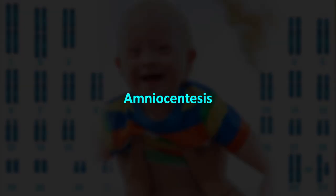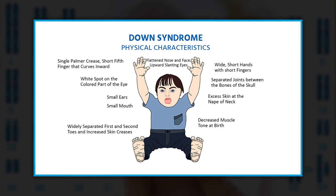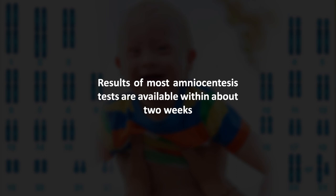With amniocentesis, the doctor inserts a thin needle through the pregnant woman's abdominal wall into the uterus. A small sample of amniotic fluid is taken from the sac surrounding the fetus. When analyzed in the laboratory, it can check for serious genetic and chromosomal disorders such as Down syndrome. Results of most amniocentesis tests are available within about two weeks.